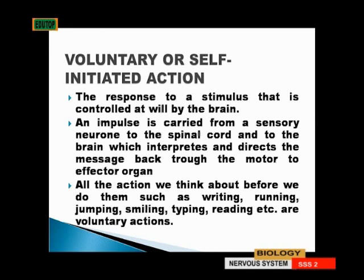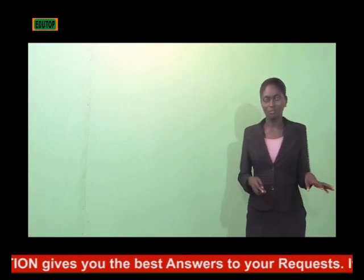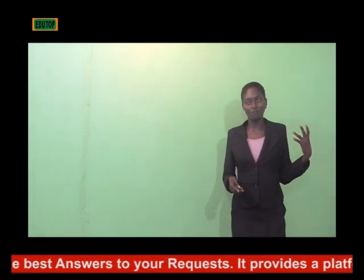Voluntary or self-initiated actions are responses to stimuli that are controlled by the brain. Voluntary action is not something you do without knowing about it; it is controlled by the brain. An impulse is carried from a sensory neuron to the spinal cord, then to the brain, which interprets and directs the message back through the motor neuron to the effector organ. Examples include writing, running, jumping, smiling, typing, and reading — all voluntary actions because you think about them before you do them.